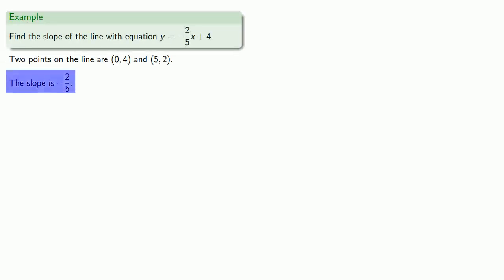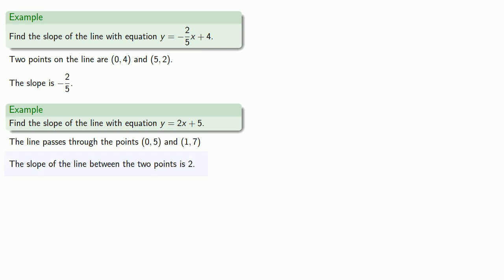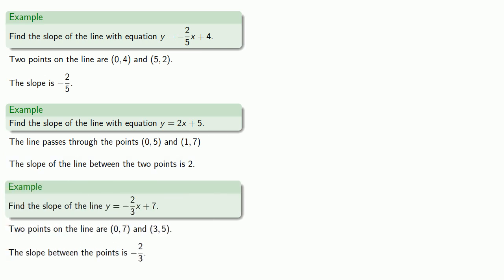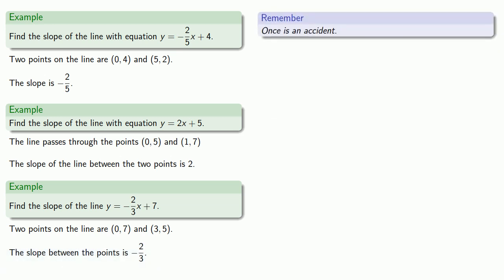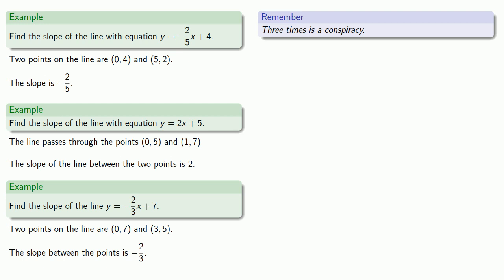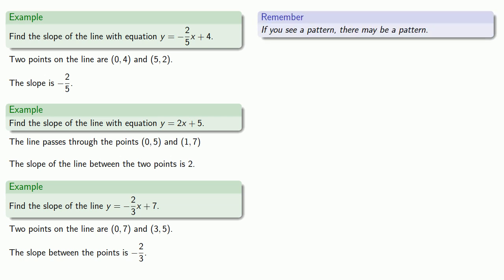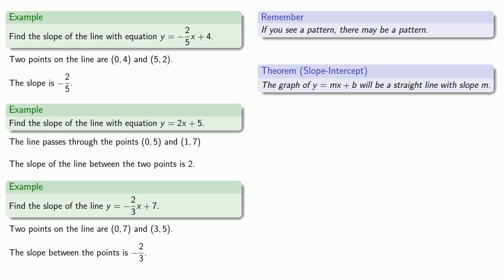So we calculated the slope of y = −(2/5)x + 4 to be −2/5, the slope of y = 2x + 5 to be 2, and the slope of y = −(2/3)x + 7 to be −2/3. As the saying goes: once is an accident, twice could be coincidence, but three times is a pattern. We see that the coefficient of x and the slope are the same each time. So we get the following useful result: the graph of y = mx + b will be a straight line with slope m.